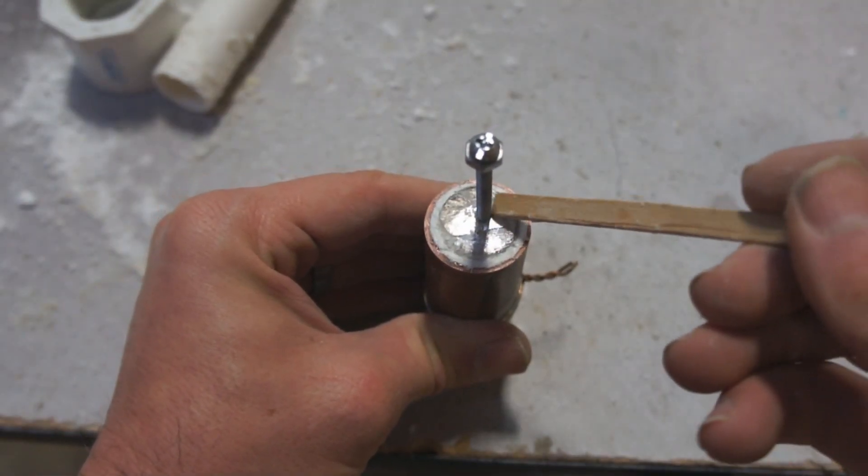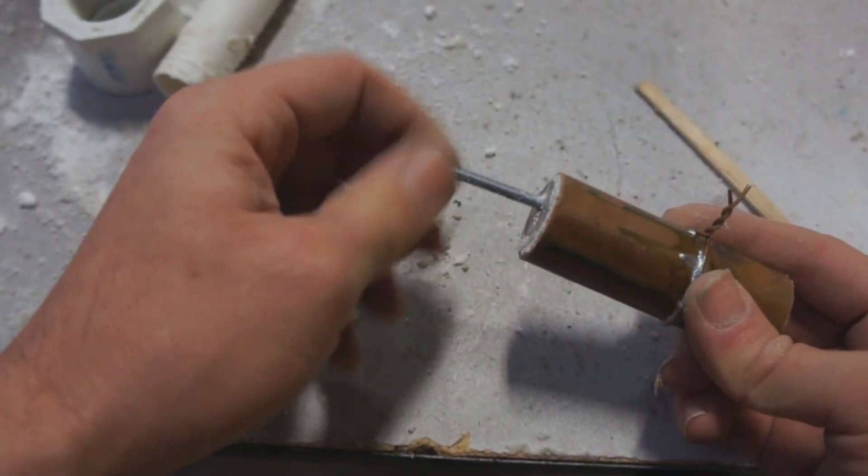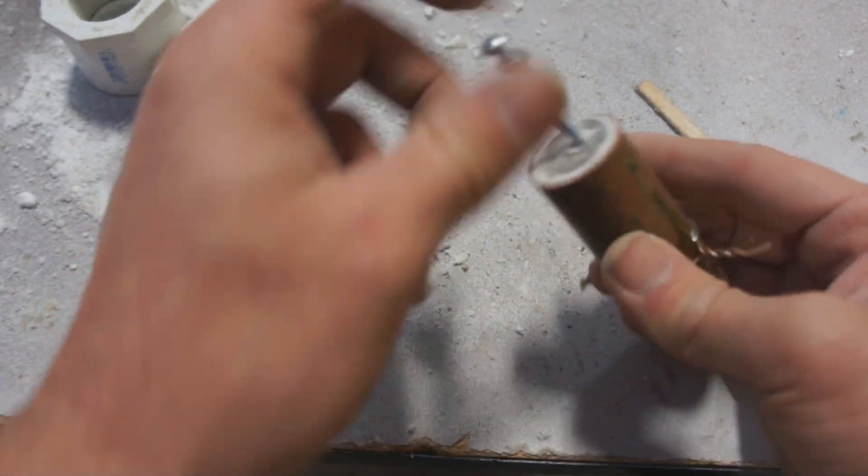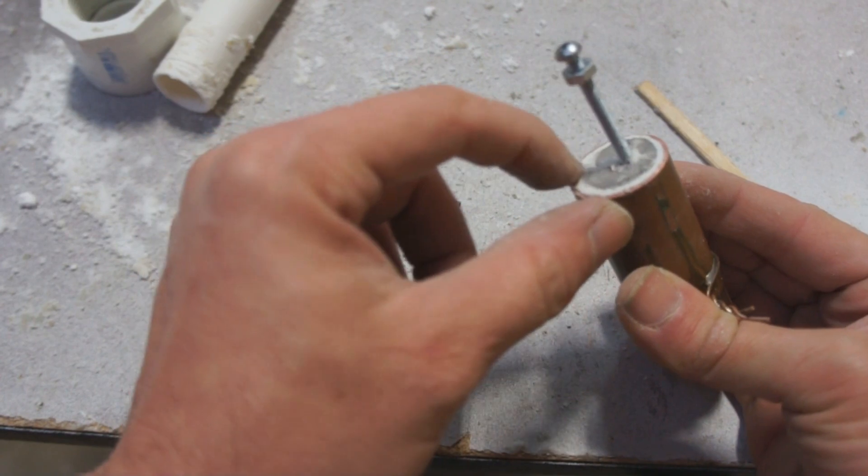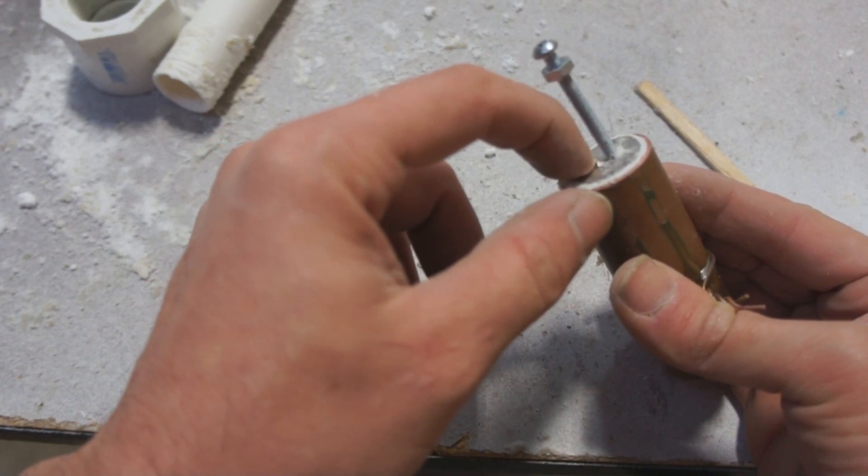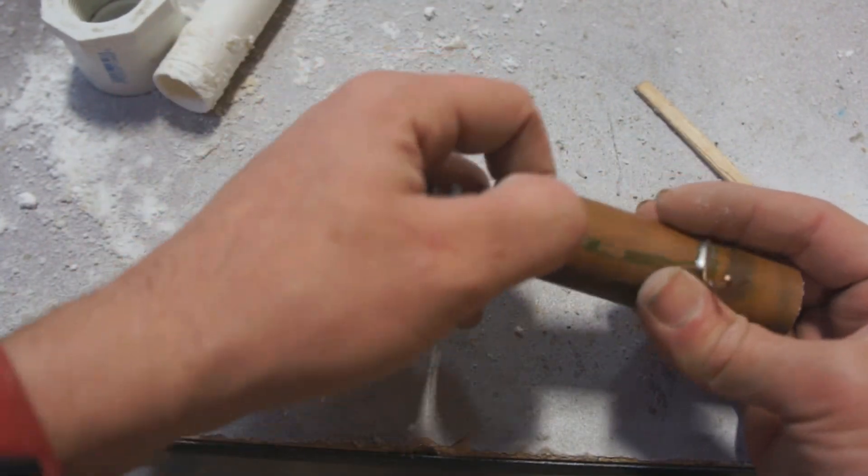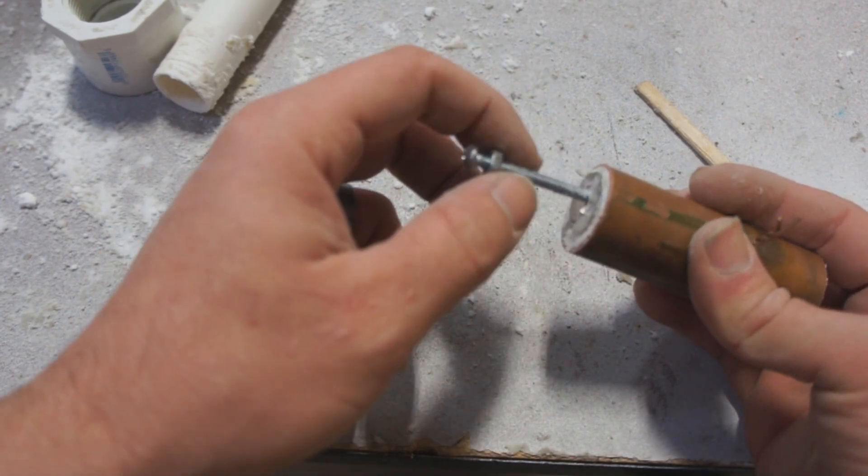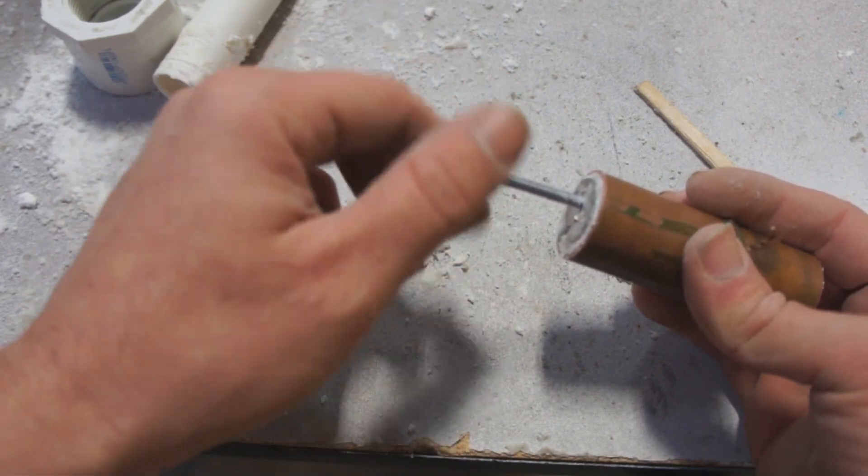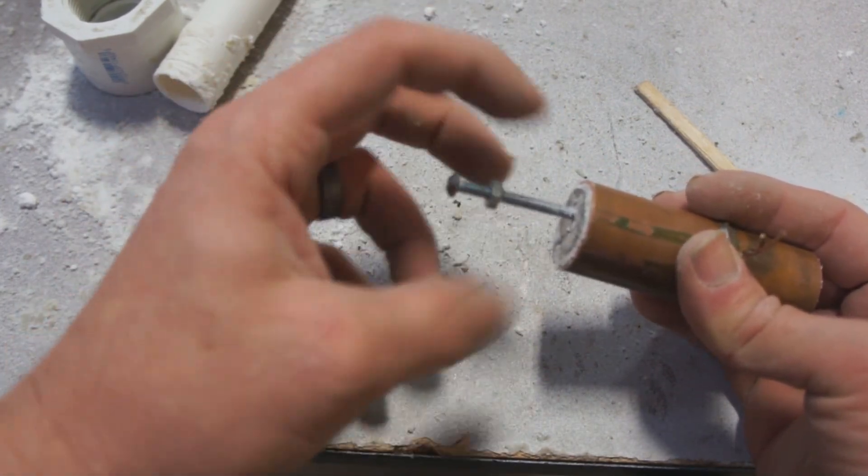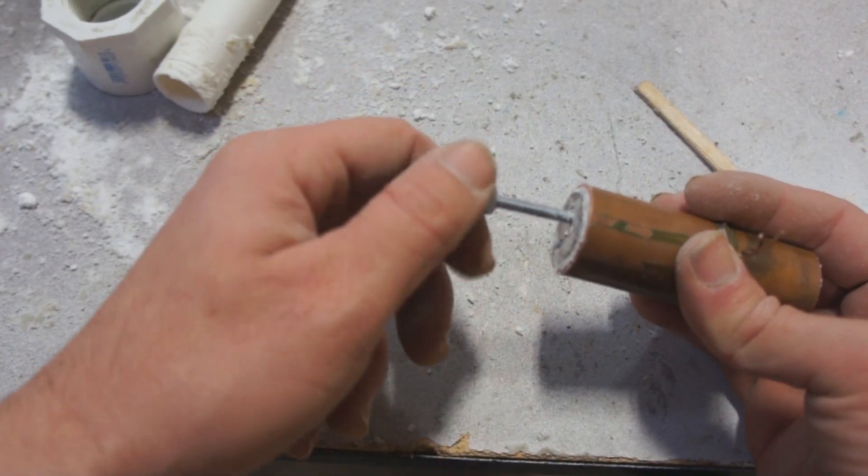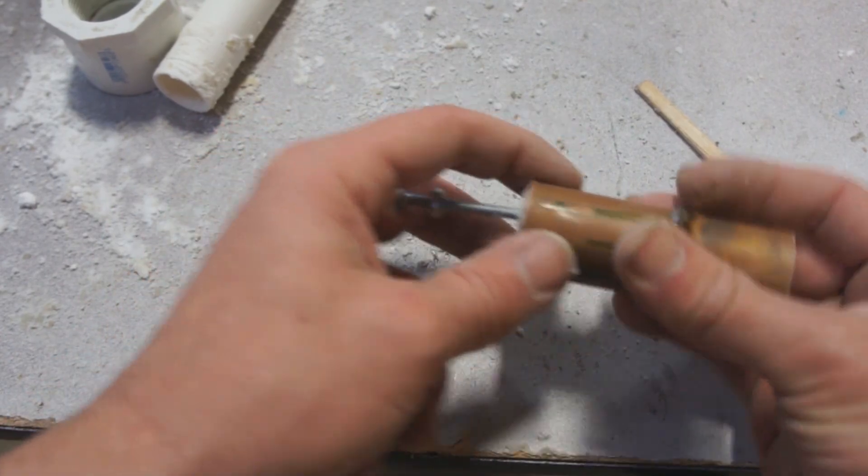Some folks have been asking about the threaded bolt and nut on top. I just drilled a hole into my magnesium core with a drill bit on low speed and screwed in this bolt. That gives me an attachment so I can put a washer on here and screw tighten this down on a wire later.